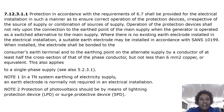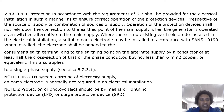When installed, the electrodes shall be bonded to the consumer's earth terminal and to the earthing point on the alternative supply by a conductor of at least half the cross-section of the phase conductor, but not less than 6 mm² copper or equivalent. This also applies to a single phase supply. Note 1: in a TN system, an earth electrode is normally not required in an electrical installation. Note 2: protection of photovoltaics should be by means of a lightning protection device or surge protective device.